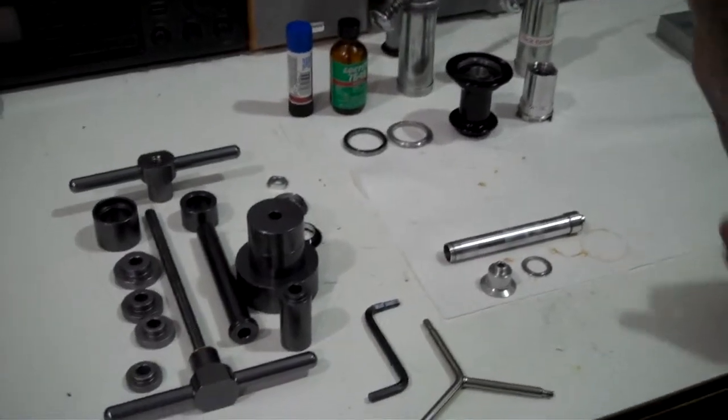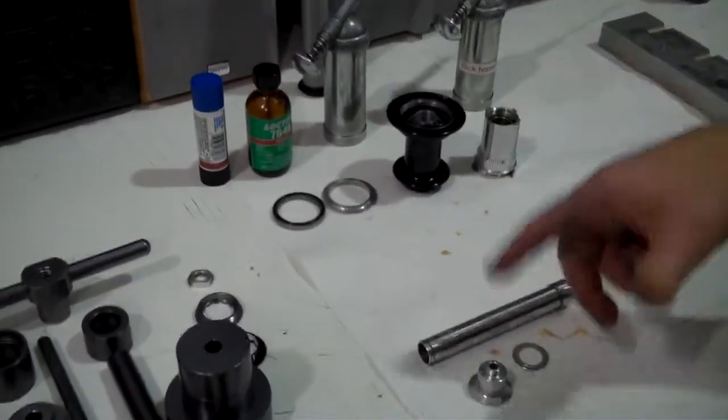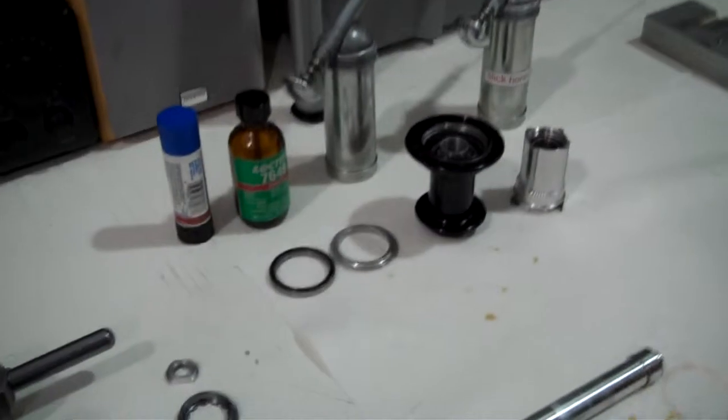Okay, so now we're going to do the final assembly, just putting the cassette body on the axle and adjusting the hub properly.